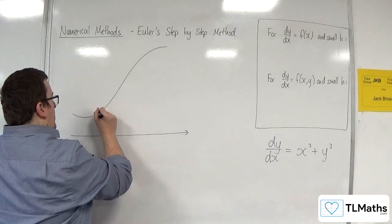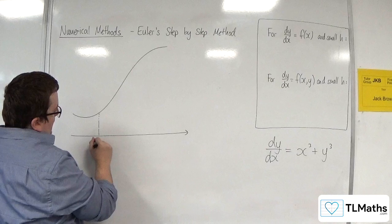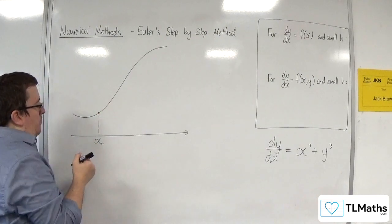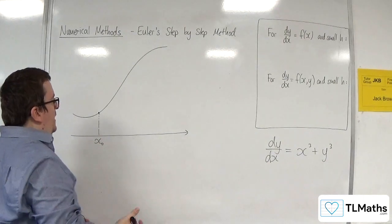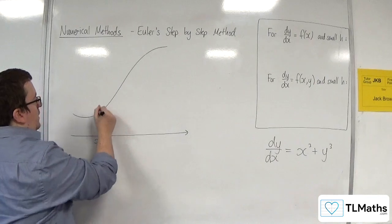Okay, so the idea is that if I start here, and this is x0, then this point here is a point that has a corresponding y value. Let's call that y0. So this height is y0.